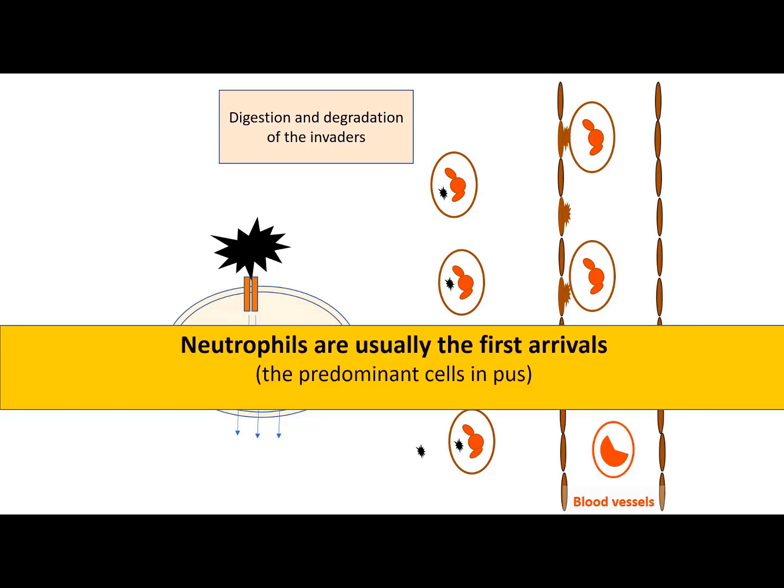It is important to know that the neutrophils are usually the first arrivals to the sites of microbe invasion. In fact, they are the predominant cells in pus.